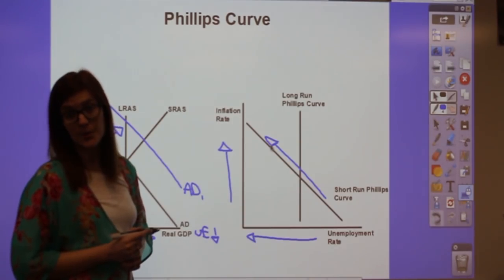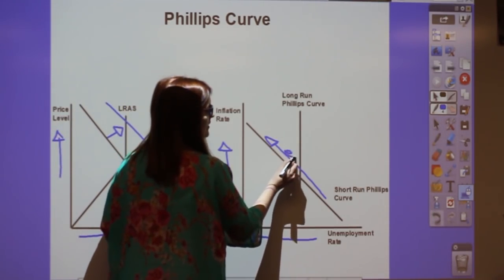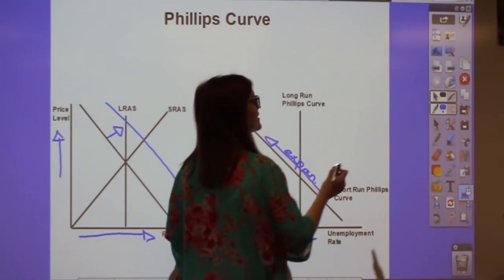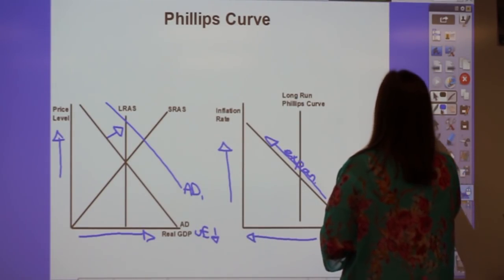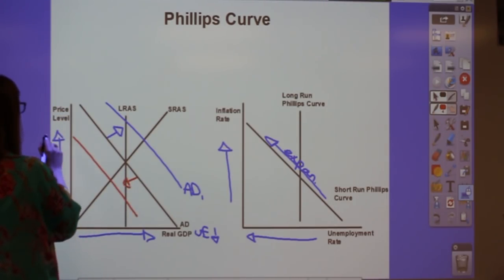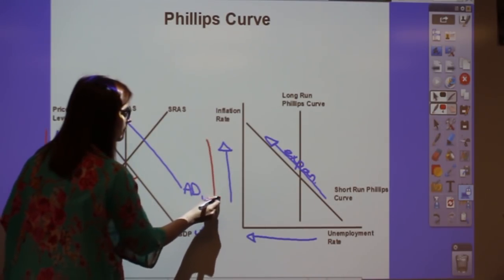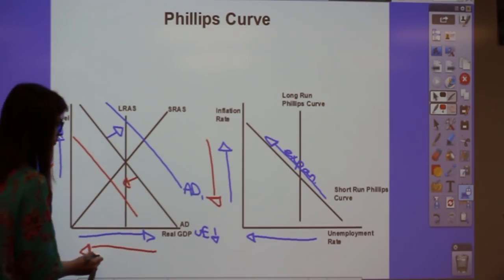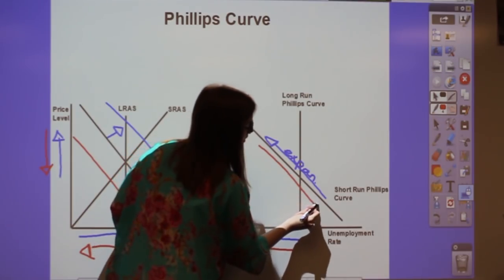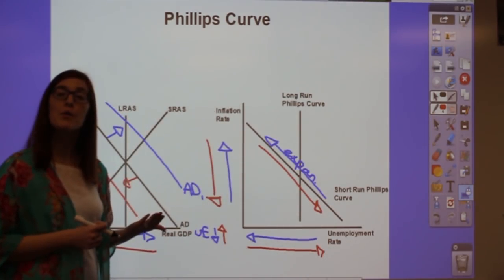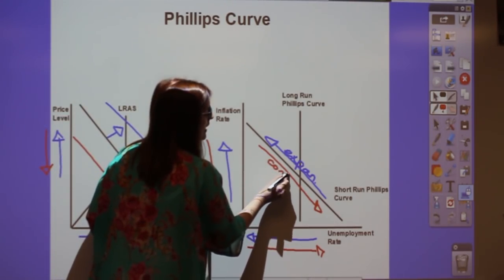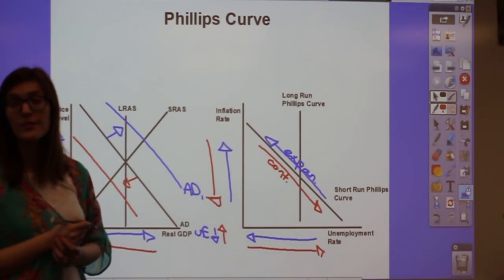Aggregate demand moving along the short run Phillips curve illustrates all expansionary fiscal and monetary policy. The same logic applies to an aggregate demand decrease: if AD falls, price levels go down—inflation falls—GDP goes down, and unemployment goes up. The inverse relationship is still maintained, now shown by moving down along the short run Phillips curve. This is how all contractionary fiscal and monetary policy is illustrated on the Phillips curve.